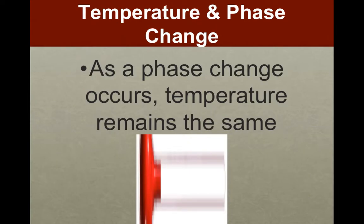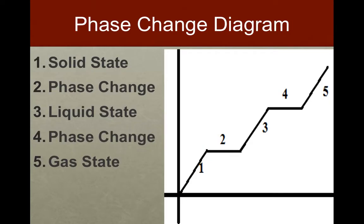Temperature and phase change: when you have an object undergoing different kinds of temperature changes, during a phase change the temperature is going to remain or stay the same.